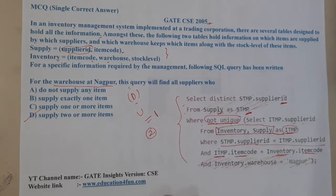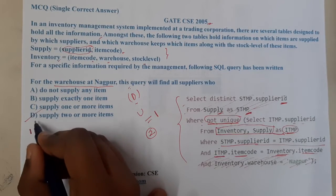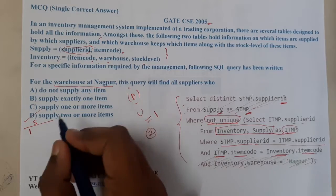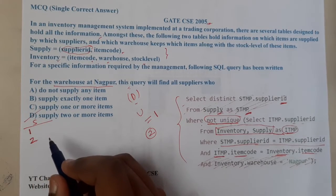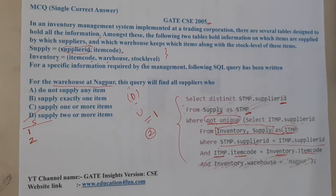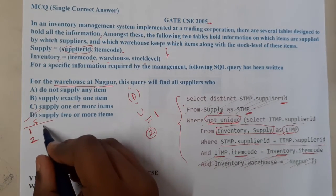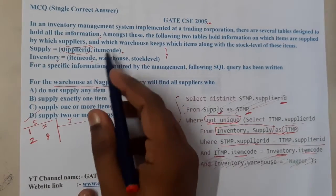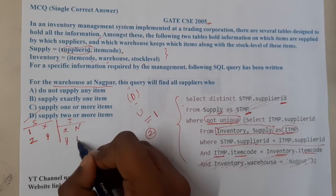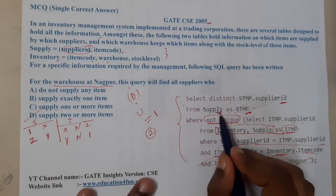Let me take a small example to confirm. We want two or more supplies, so let us take two items. The supplier table has supplier ID one with item code X, and supplier ID two with item code Y. In the Inventory table we have item codes X and Y, both in the warehouse at Nagpur, with stock levels two and one respectively.